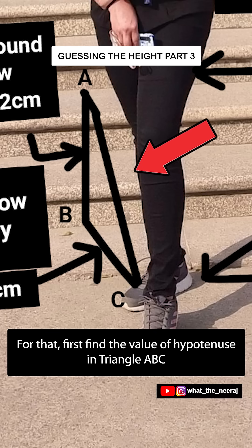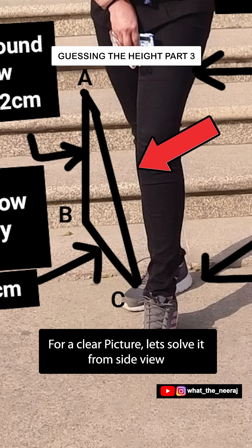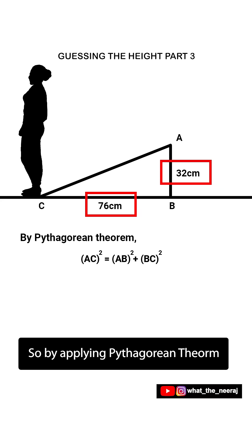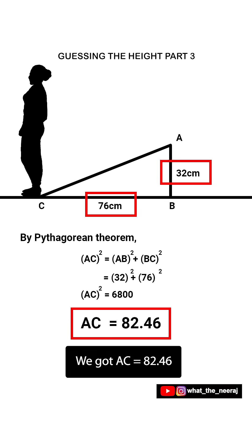To find the shadow length, first we find the hypotenuse in triangle ABC. Looking at it from the side view: BC equals 76cm and AB equals 32cm. Applying the Pythagorean theorem, we get AC equal to 82.46cm.